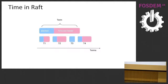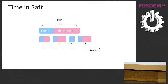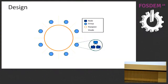In Raft, time is divided into terms. Each term comprises a leader election, which either results in a new leader or fails if no node receives a majority — in which case the process repeats. Time is thus logically divided into these terms.